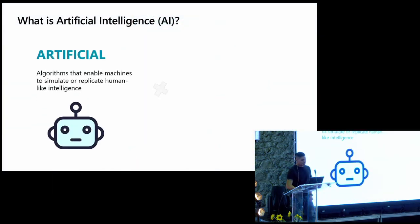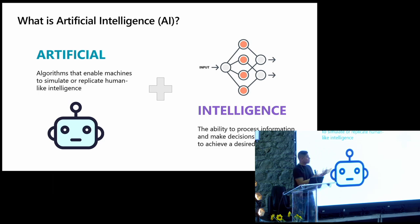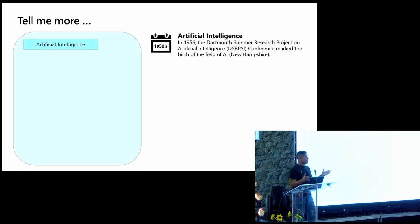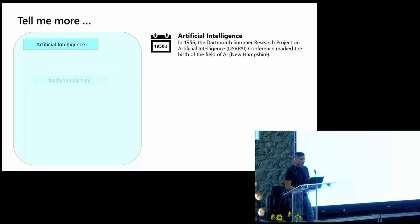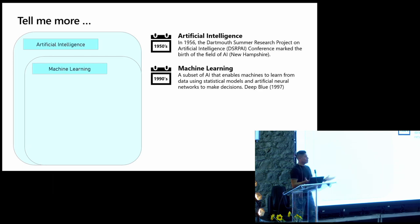Let's start with the basics: what's artificial intelligence? Artificial intelligence overall is pretty much algorithms that would enable a system to mimic or replicate human intelligence — the ability to process data, learn from data, make decisions, and make predictions towards a specific goal. This concept is not new. A lot of you might think this started a couple of years ago, but it dates back to the 1950s and 1940s. In 1956, the term artificial intelligence was coined at a conference in New Hampshire. Machine learning is a subset of AI — we moved from telling the algorithm what to do based on rules to telling the algorithm to learn from data.